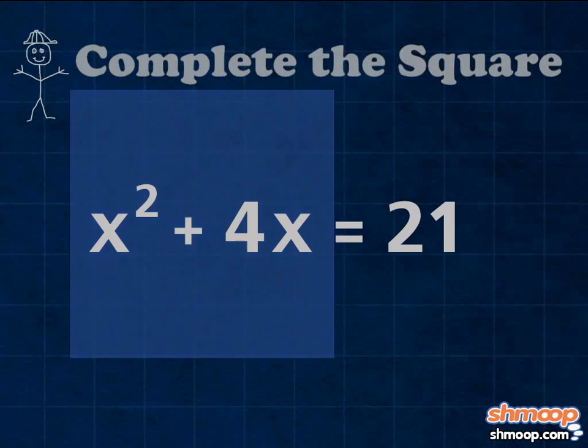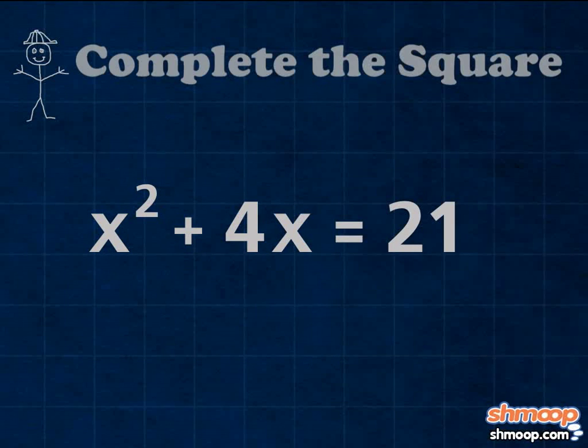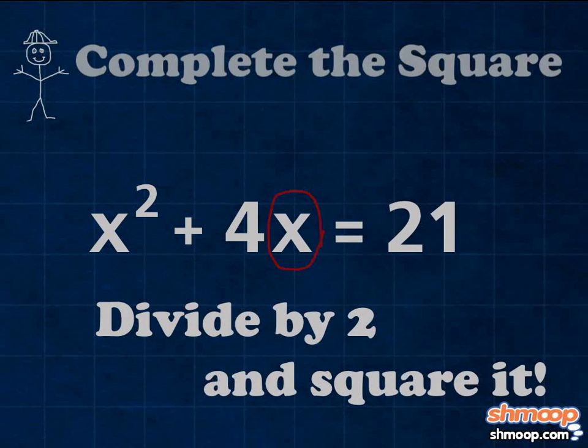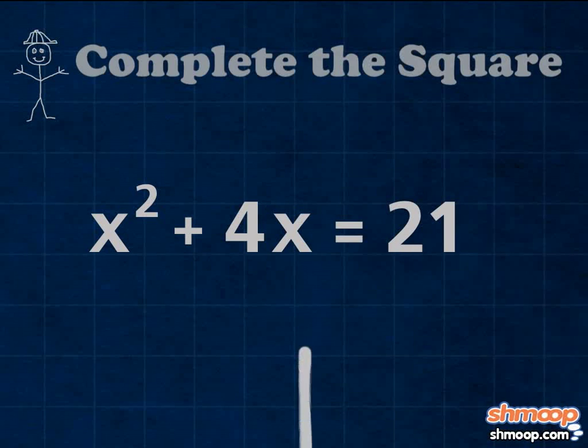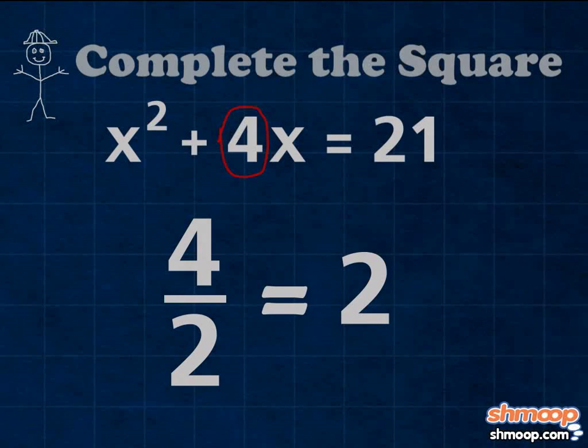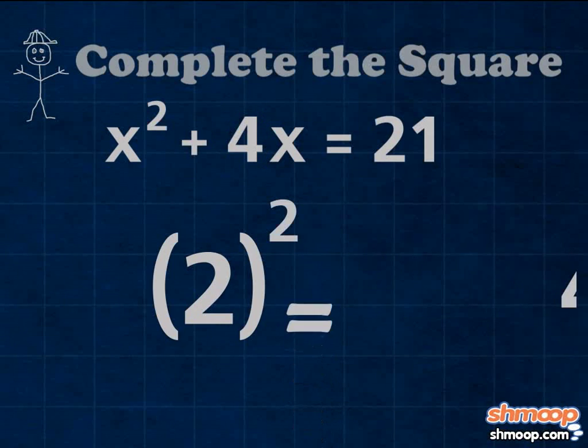We can find this number by taking the coefficient of the x term, dividing it by 2, and squaring it. In this case, our coefficient of the x term is 4. 4 divided by 2 equals 2. 2 squared equals 4.